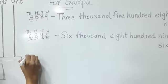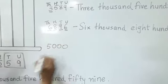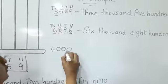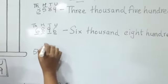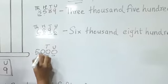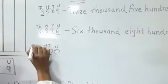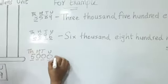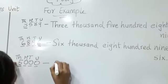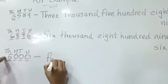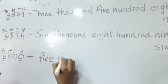Now if I write 5000 — on the unit place it is zero, on the tens place it is zero, on the hundreds place it is also zero, and on the thousands place it is 5. So you only have to write five thousand, because all other places are zero.